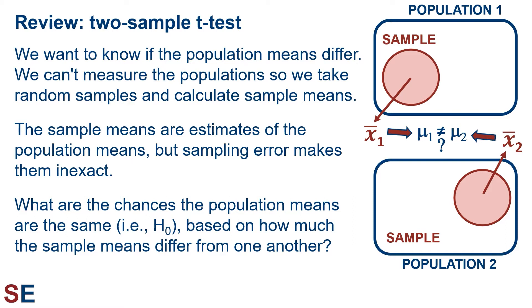If the sample means are similar, that's weak evidence that the population means are different. But if the sample means are different, that's better evidence that the population means are different. We also need to take into account the variation or noise in the data values. The t-test is how we do this.